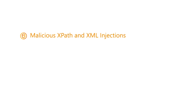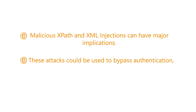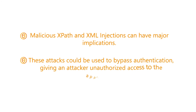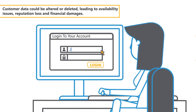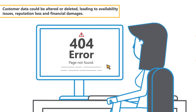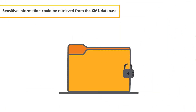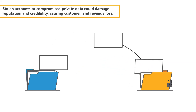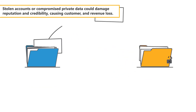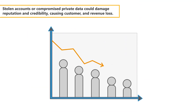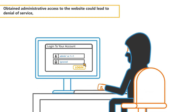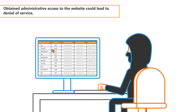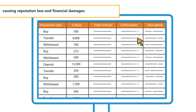Malicious XPath and XML injections can have major implications. These attacks could be used to bypass authentication, giving an attacker unauthorised access to the application. Customer data could be altered or deleted, leading to availability issues, reputation loss, and financial damages. Sensitive information could be retrieved from the XML database. Stolen accounts or compromised private data could damage reputation and credibility, causing customer and revenue loss. Obtained administrative access to the website could lead to denial of service, causing reputation loss and financial damages.